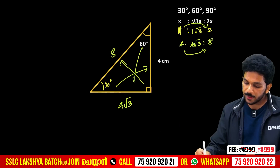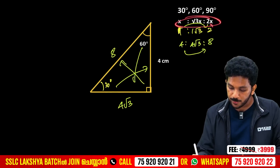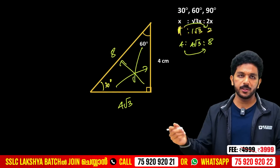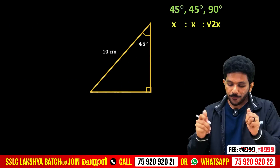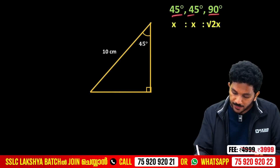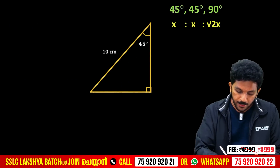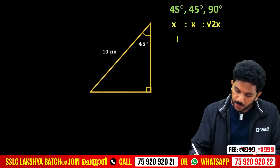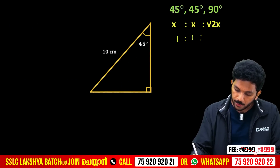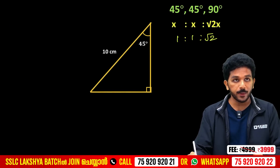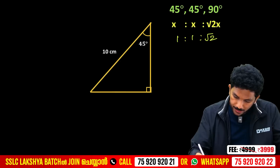Now the ratio is multiplied by the x-method. For 45-45-90, the ratio is 1:1:√2.